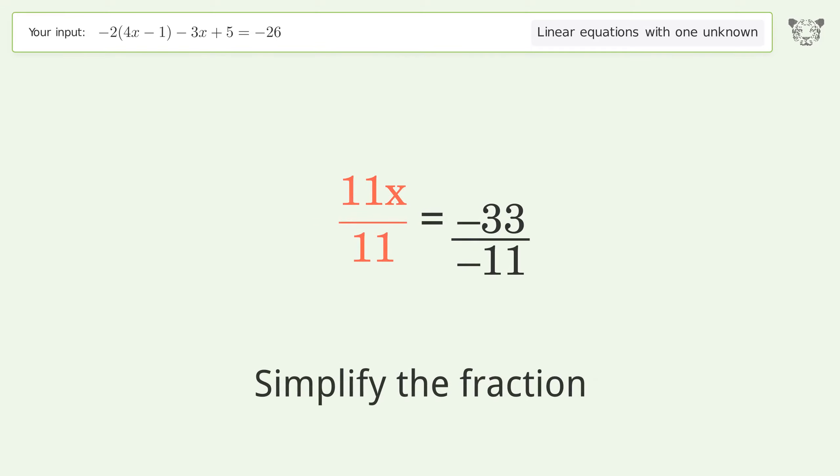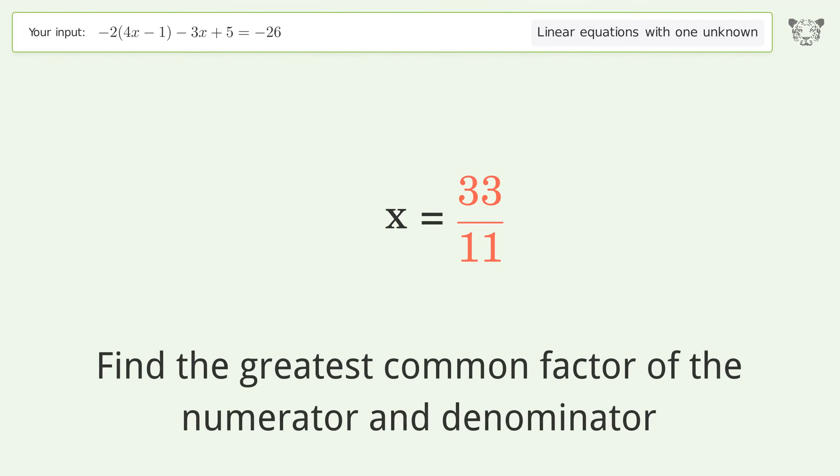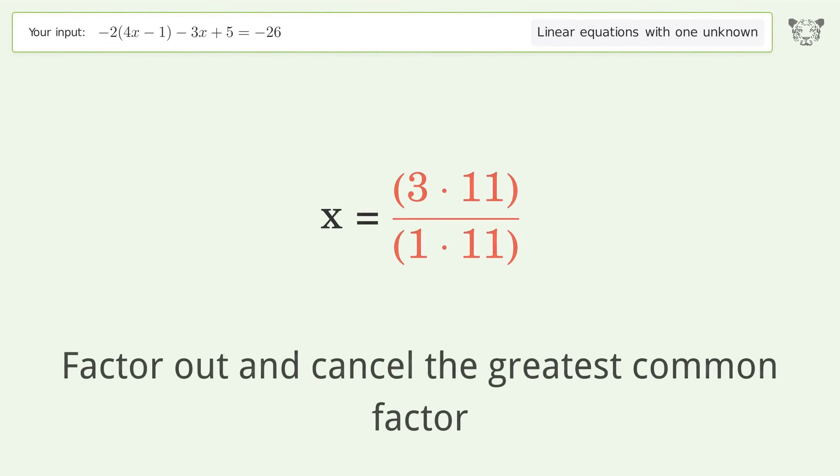Simplify the fraction. Cancel out the negatives. Find the greatest common factor of the numerator and denominator. Factor out and cancel the greatest common factor.